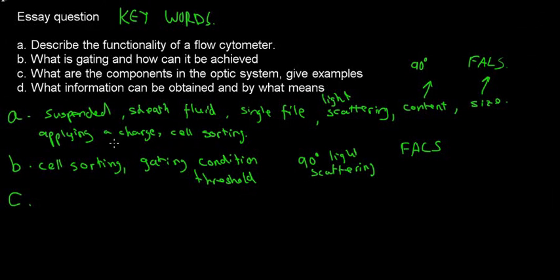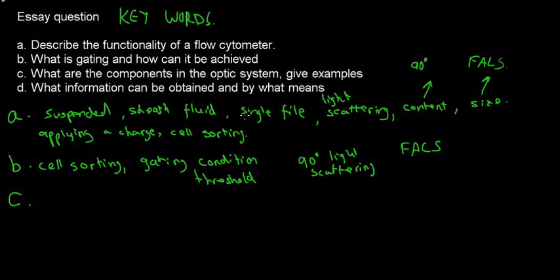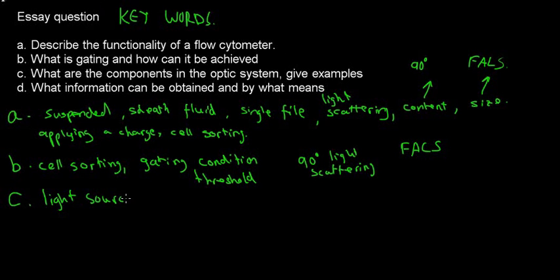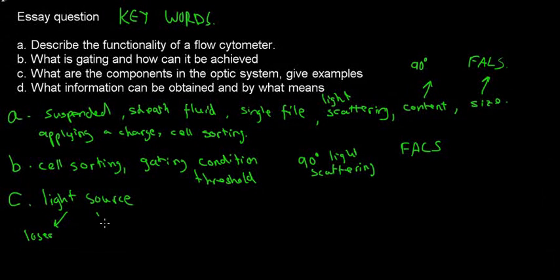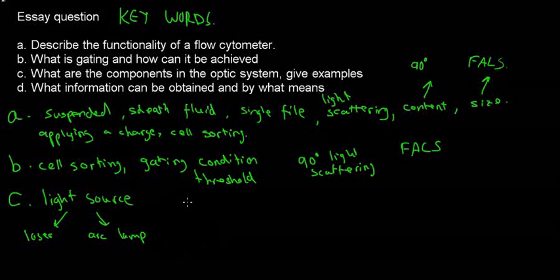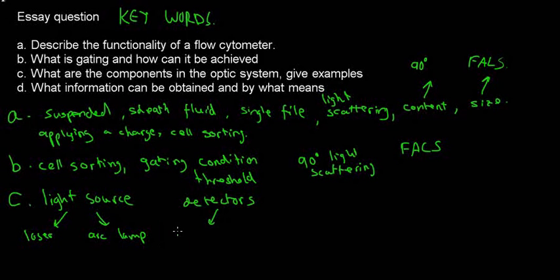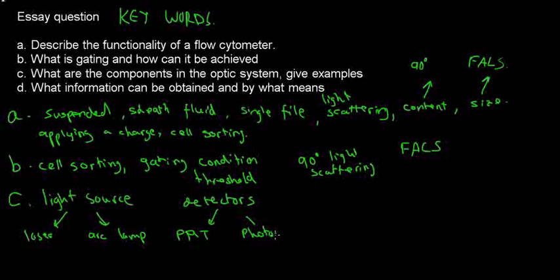Question C: What are the components in the optic system? Give examples. The components in the optic system are really the light source — it could be either a laser or an arc lamp. And then the detectors or collectors, for which you can have photomultiplier tubes or photodiodes.